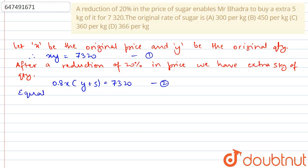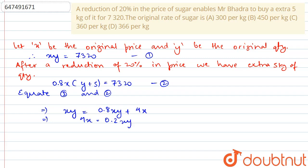We will equate equations 1 and 2. This gives us X into Y is equal to 0.8XY plus 4X, which implies 4X is equal to 0.2XY, which implies Y is equal to 20. So, initially he purchased 20 kg. Now, we will calculate the price from equation 1.